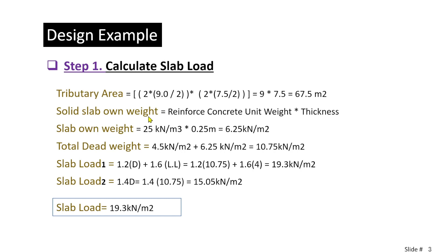Next, we calculate the slab self-weight. Reinforced concrete unit weight is approximately 25 kN per cubic meter, multiplied by the slab thickness of 0.25 m, giving 6.25 kN per meter square. Total dead load is super dead 4.5 plus self-weight 6.25, equaling 10.75 kN per meter square. Slab load combination 1 gives 19.3 kN per meter square, and combination 2 gives 15.05 kN per meter square. The governing first combination is 19.3 kN per meter square.